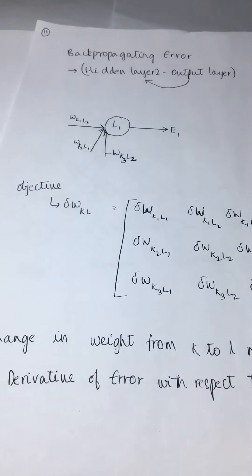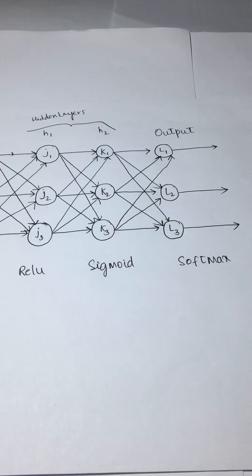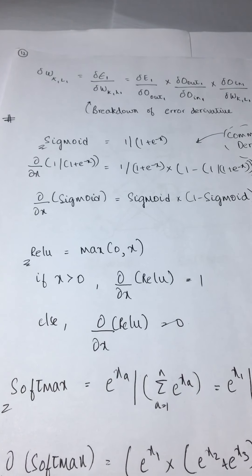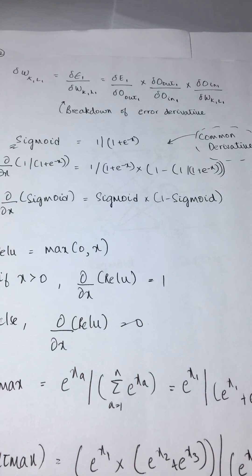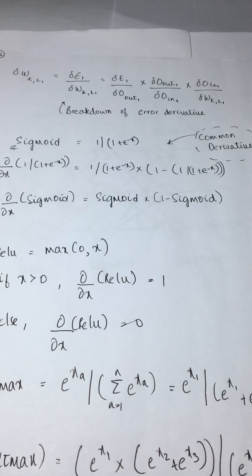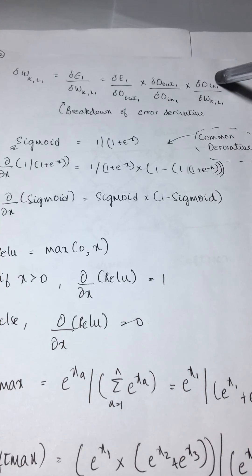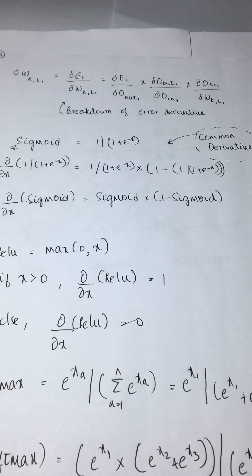What you basically calculate is the change in weight from the K2L neuron. How you calculate that is: you take the derivative of error with respect to weight. This is where the concept of chain rule comes in. Since you cannot directly take the derivative of error with respect to weight, you break down the derivative into: derivative of error with respect to output, times derivative of output with respect to input, times input with respect to the weights. These intermediate terms cancel, and you end up with the same thing — this is what chain rule is.